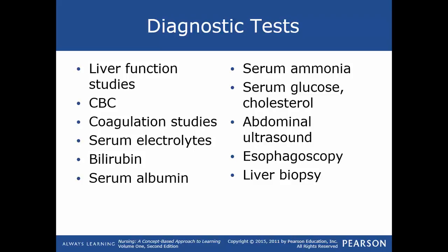Coagulation times are prolonged due to lack of vitamin K. Bilirubin is increased with severe cirrhosis — both direct and indirect. Serum albumin is usually decreased from impaired liver production. Serum ammonia is increased because the liver fails to convert it to urea for renal excretion. Serum glucose and cholesterol are often abnormal. Abdominal ultrasound evaluates liver size, ascites, and identifies liver nodules. Esophagoscopy — upper endoscopy — is done to look for esophageal varices. Liver biopsy may be done to distinguish cirrhosis from other liver diseases.